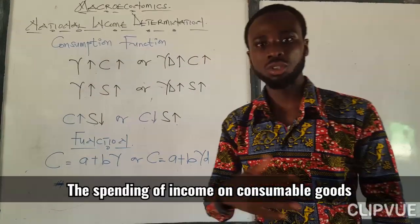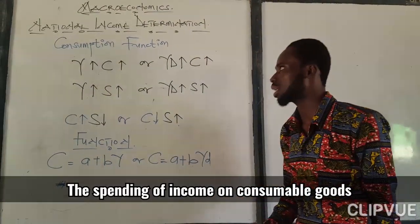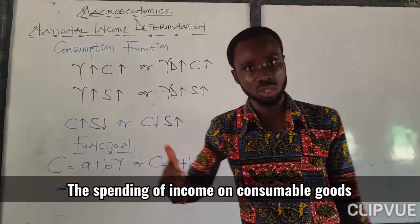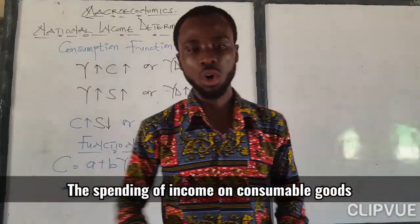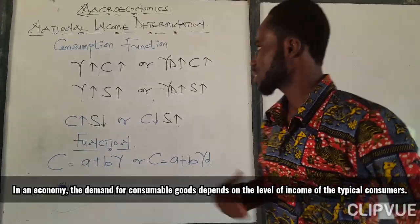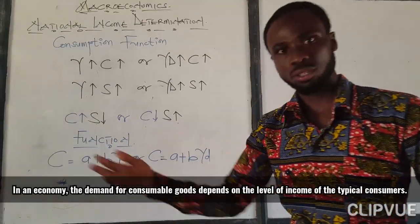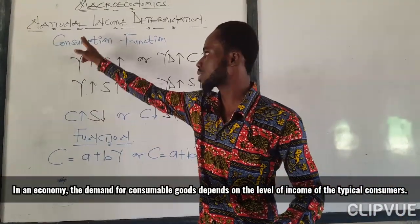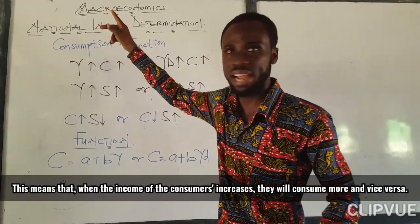When we talk about consumption, we are talking about how income is being spent on consumable goods. We are saying that if income is being spent on consumable goods, then when income goes up, our consumption is going to go up — it's going to rise.